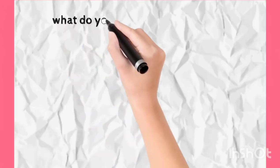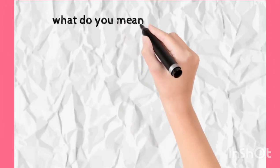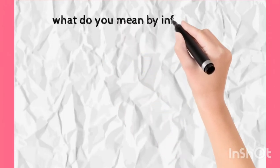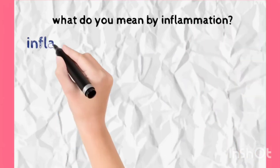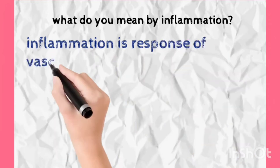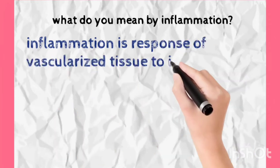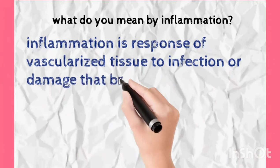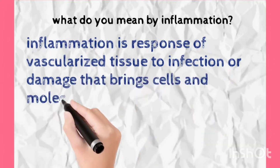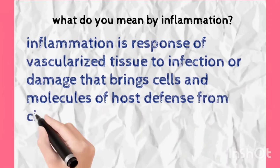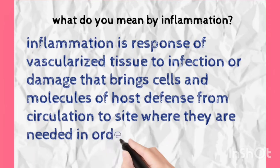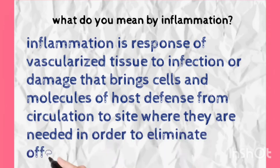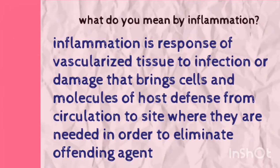So to begin with, what actually is inflammation? Robbins states that inflammation is a response of vascularized tissue to infections and damaged tissue that brings cells and molecules of host defense from circulation to the sites where they are needed, in order to eliminate the offending agent. This was the bookish definition — now we will understand what this definition actually means.